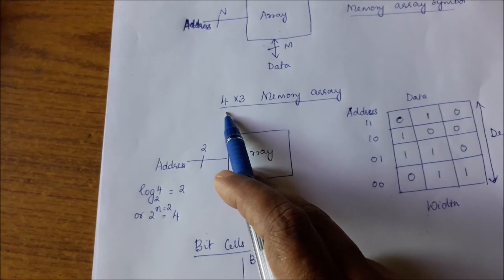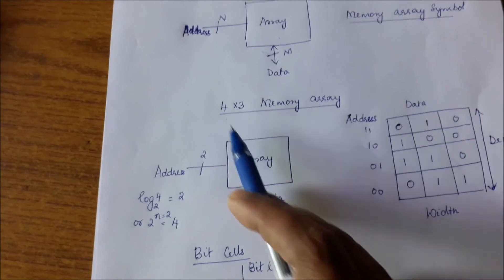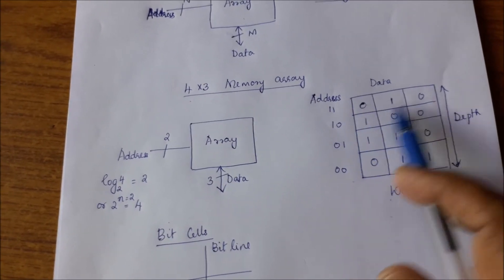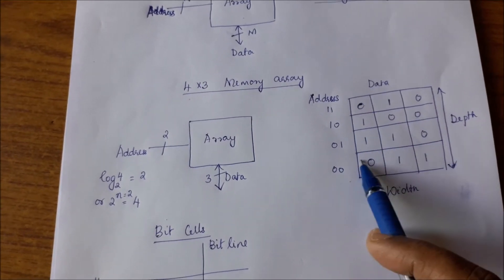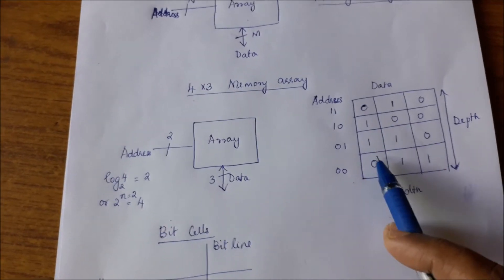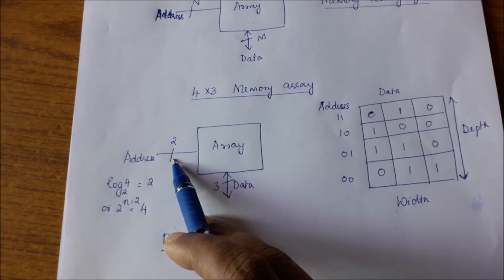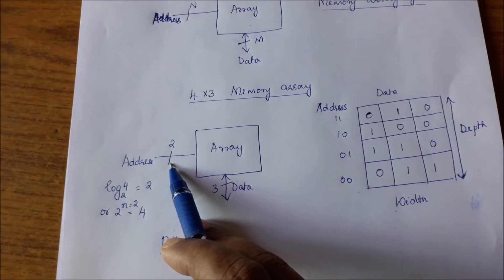When you have 4 words to address, that is 4 locations—you can see in this picture 4 locations: this is 1 word, this is the 2nd word, this is the 3rd word and the 4th word. When you have 4 words to address, you need a minimum of 2 address lines because 2 address bits can take 4 combinations.